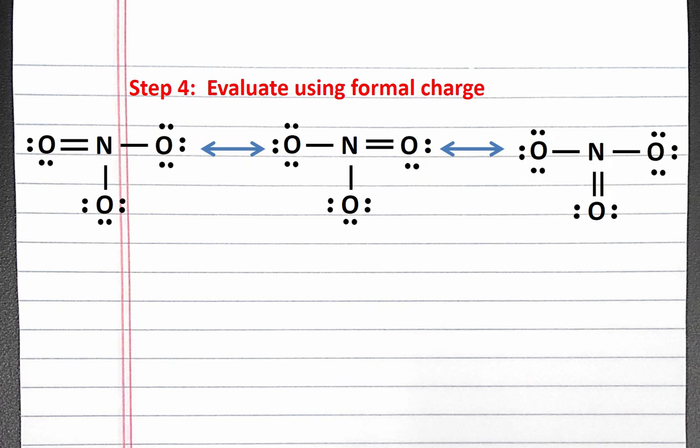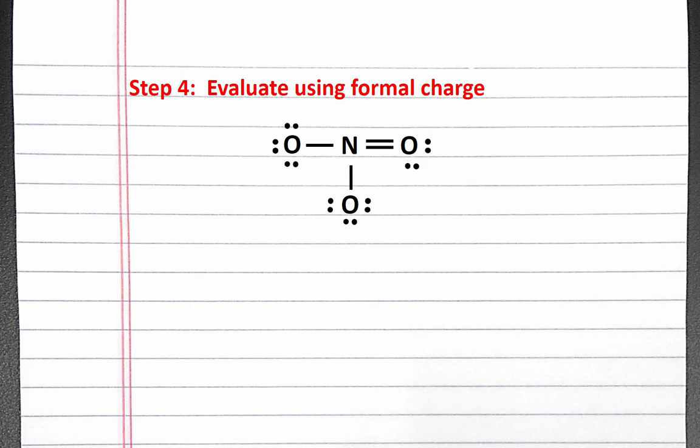Our last step is to evaluate our resonant structures using formal charge. Since all three resonant structures have the same bonds, we'll focus on assigning formal charges to the atoms in one structure. To calculate the formal charge on nitrogen, we take the number of valence electrons in a neutral nitrogen atom, subtract the number of lone pair electrons on nitrogen, and the number of bonds with nitrogen. A neutral nitrogen atom has five valence electrons. There are no lone pair electrons on nitrogen, and there are four bonds with nitrogen, so our formal charge on nitrogen is plus one.